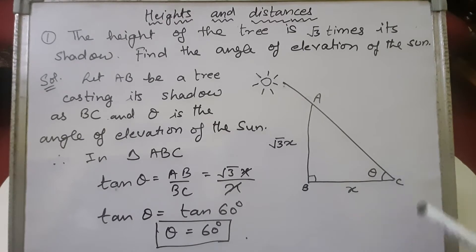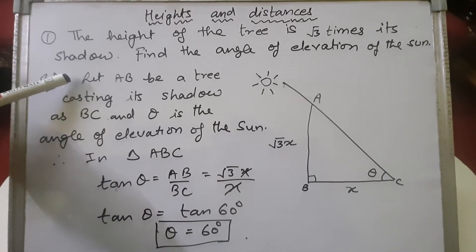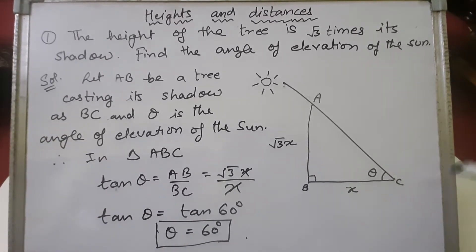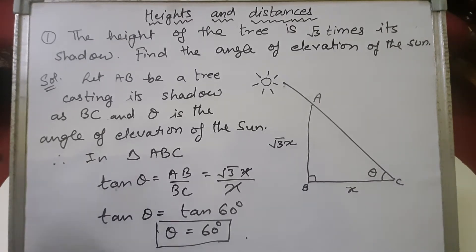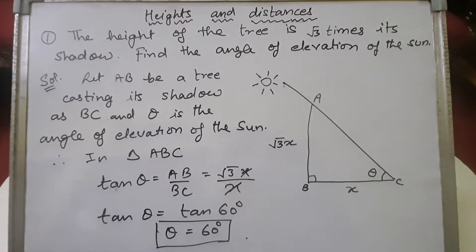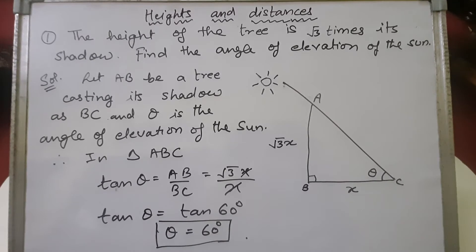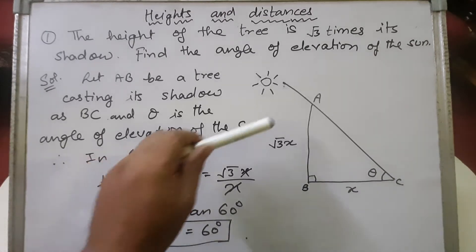Solution: Let AB be the tree casting its shadow BC, and theta be the angle of elevation. In height and distance problems, always draw the figure properly first. In triangle ABC, we need to find angle theta. We are given the base BC and perpendicular AB — it is a right-angle triangle. The trigonometric ratio that relates base and perpendicular is tan.